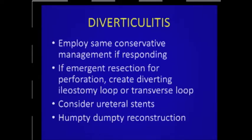Diverticulitis is probably the most common colon condition we see in terms of inflammatory disease. The same conservative strategy applies perioperatively. You heard about the advantages of washout using a laparoscopic approach. If you need to do an emergent resection and diverting ostomy, your choices should be a loop ileostomy or transverse loop, because doing any kind of sigmoid ostomy becomes very difficult in this patient population. If they're very obese and inflamed, you probably want to use preoperative ureteral stents.